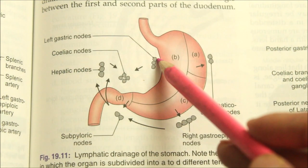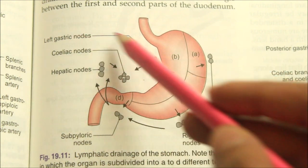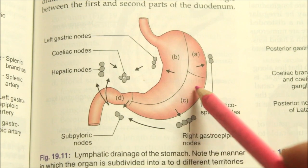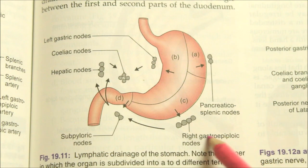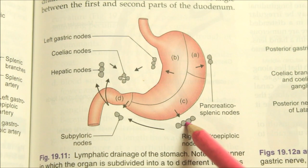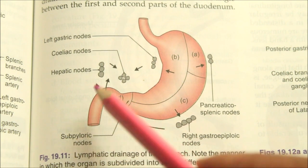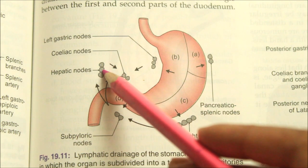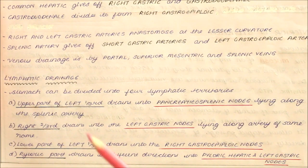The right two-thirds of the stomach drain into the left gastric lymph nodes lying along the left gastric artery. The lower part of the left one-third drains into the right gastroepiploic lymph nodes. The pyloric part drains in different directions into the pyloric hepatic nodes and sub-pyloric nodes.